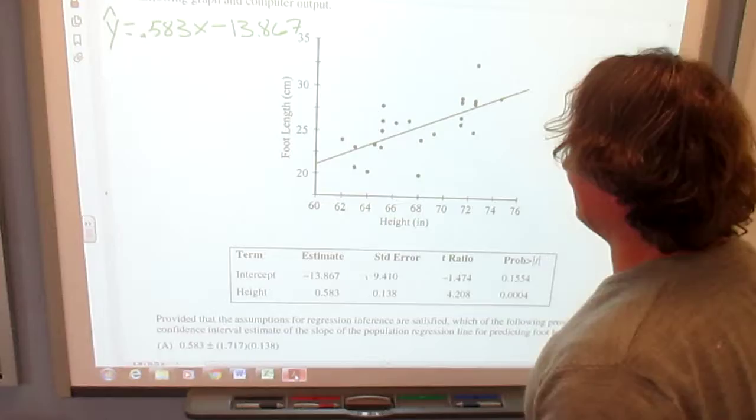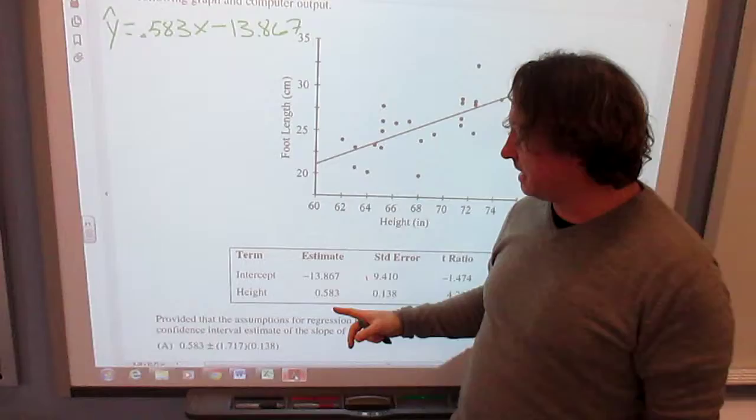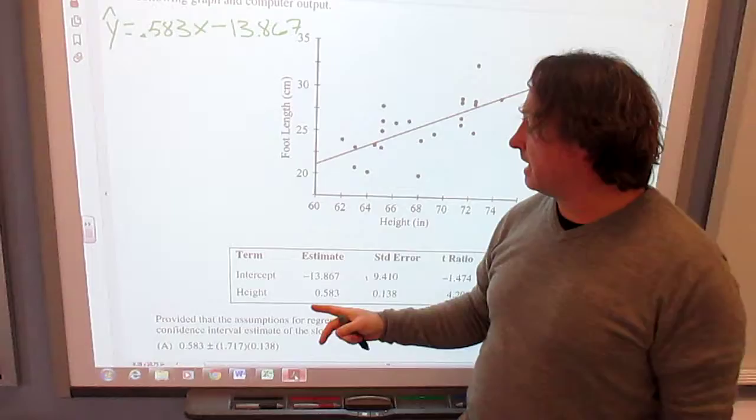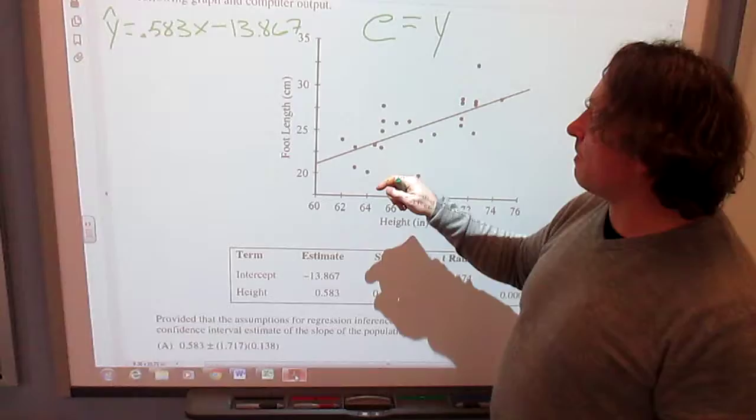Today we're going to be learning about residuals. So we've already talked about how to create the formula Y hat equals the slope .583 times X minus 13.867. There's a video on that. Y hat being the predicted foot length, X being the height. So we want to talk about what is a residual. Your residual has the letter E. That means residual in statistics, and that's equal to your actual Y minus your predicted Y.